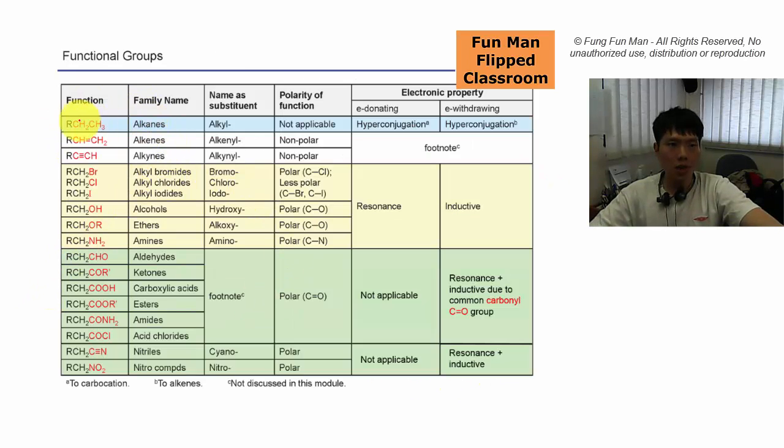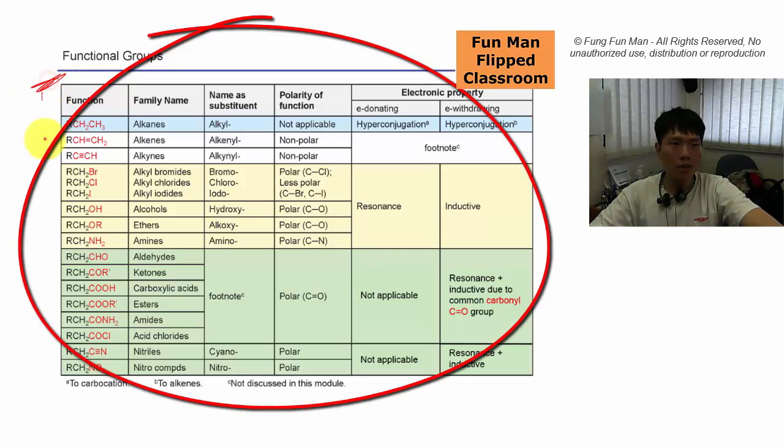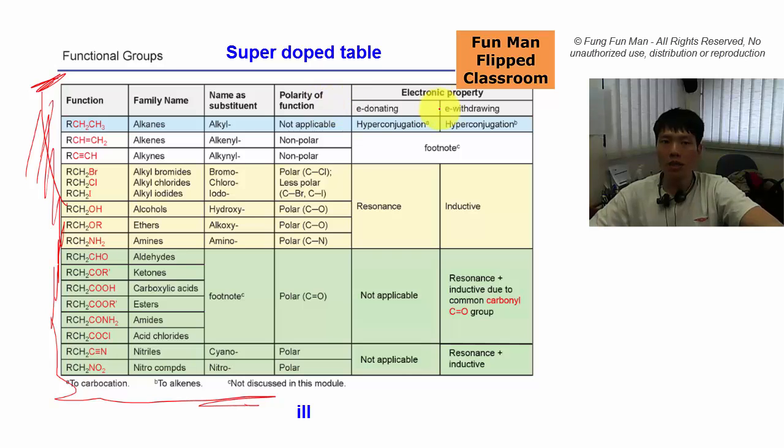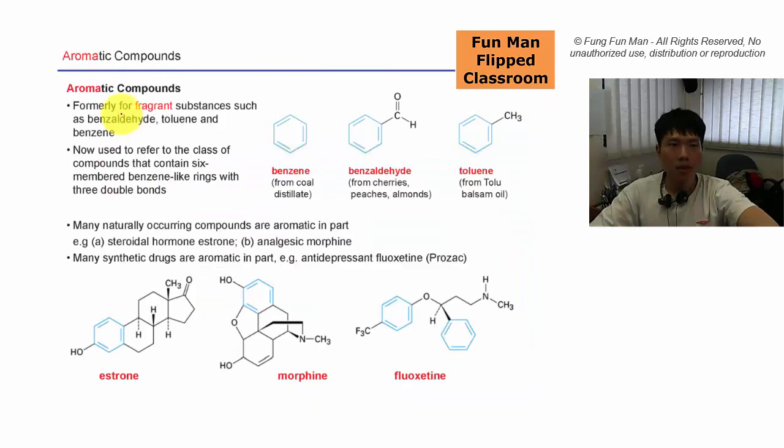This is a good summary for you. This table shows the functional groups, family name, and when they're named as substituents, what do you call them, the polarity of the functional group, and of course electronic properties. Do they donate electrons or do they withdraw electrons? And if they do, what kind of effect do they show?